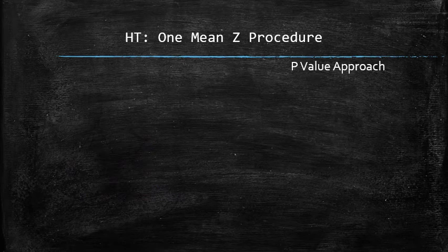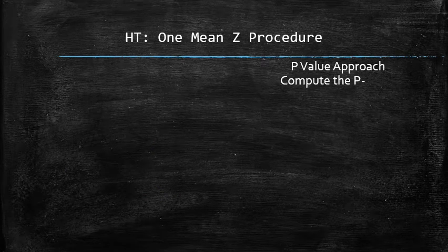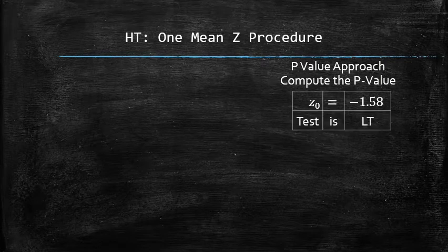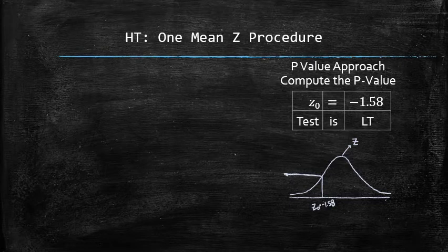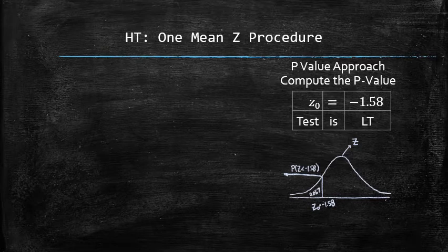In the p-value approach, we compute the p-value. We need to know the test statistic and the type of the test. We find the p-value using the standard normal probability density curve according to the type of the test. In a left-tail test, the p-value is the area to the left of the test statistic. Symbolically, it can be expressed as the probability of z being less than negative 1.58, which is equal to 0.057.